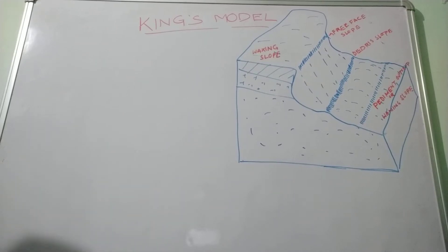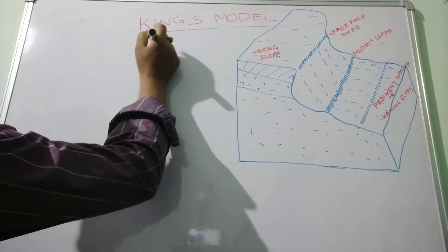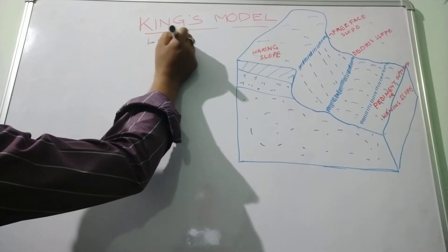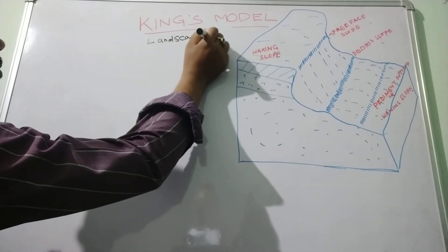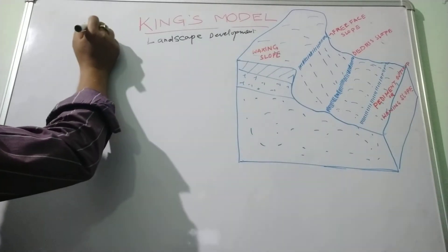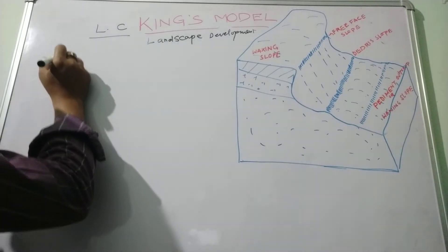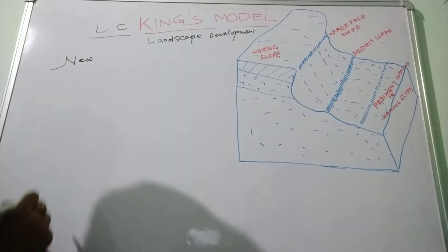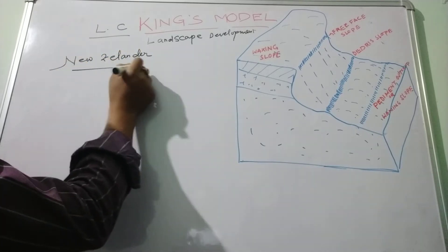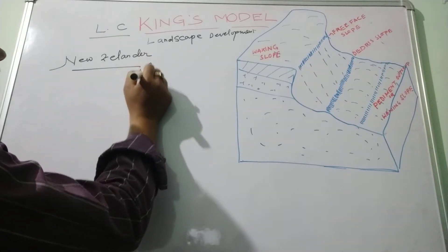Today we are going to discuss L.C. King's model of landscape development. L.C. King was basically a New Zealander and he worked on the model in the African landscape.